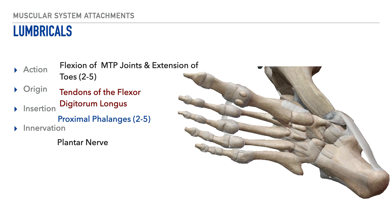Next are the lumbricals. The action of this group of muscles includes flexion and extension of the toes, specifically toes 2 through 5. The origin is at the location of the flexor digitorum longus tendon. The insertion is on the proximal phalanges, specifically toes 2 through 4. The innervation is the plantar nerve.